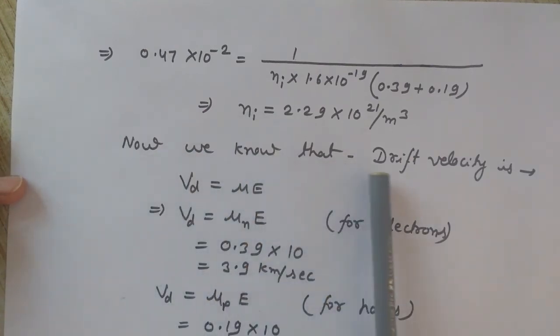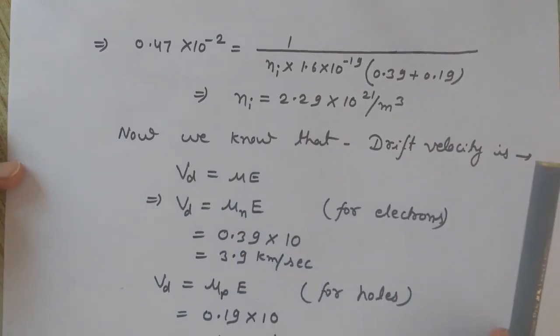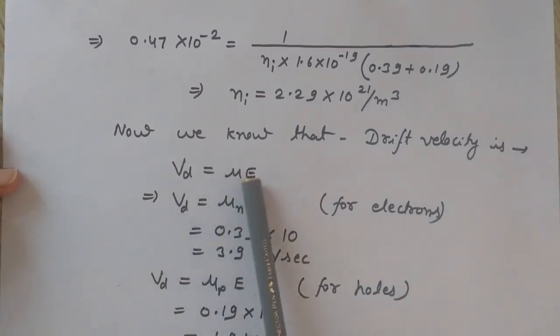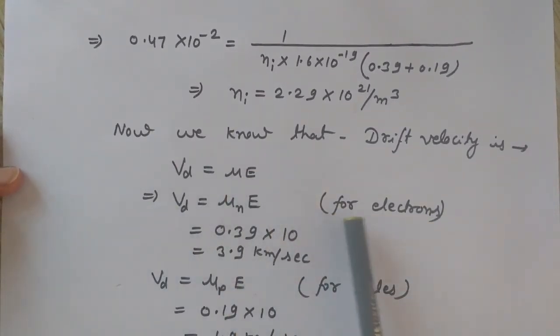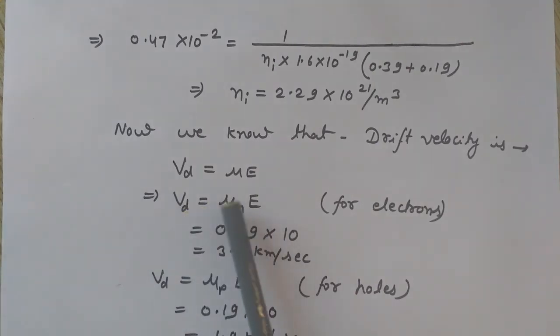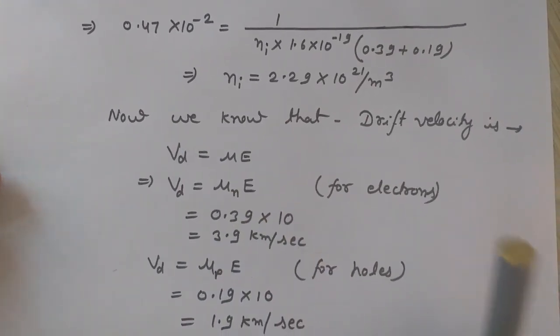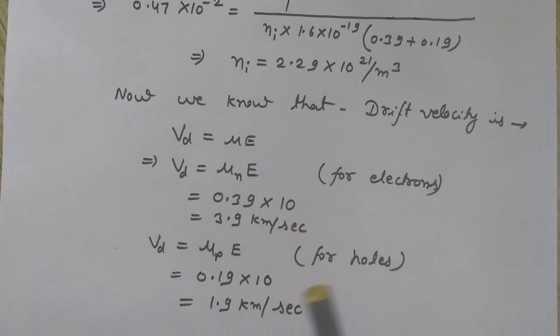Now we know that the drift velocity is given by velocity drift equals mu into E. So for electrons, if I want to calculate its drift velocity then we will take the mobility of electrons and electric field value which is 10. So just put the values here, I get 3.9 kilometer per second which is the drift velocity of electrons.